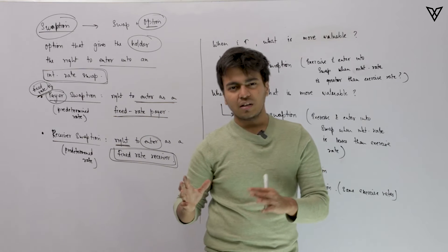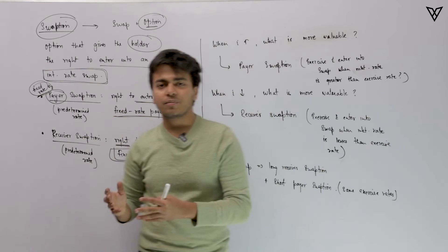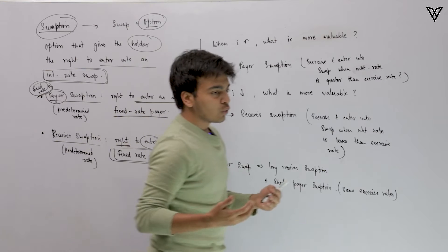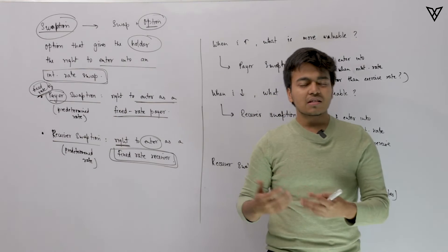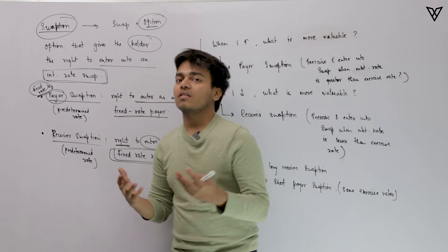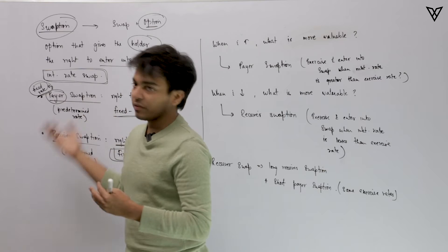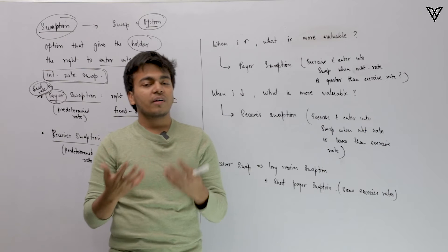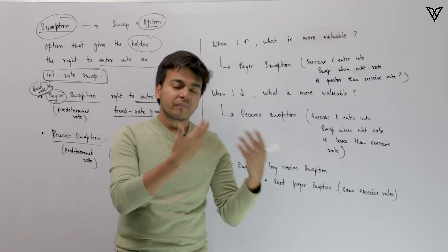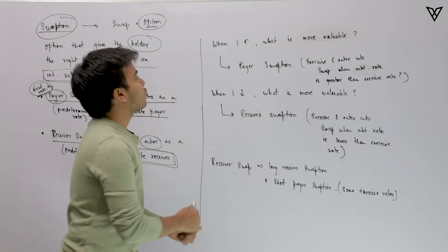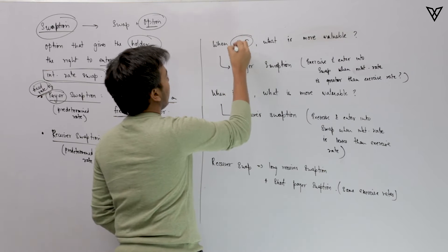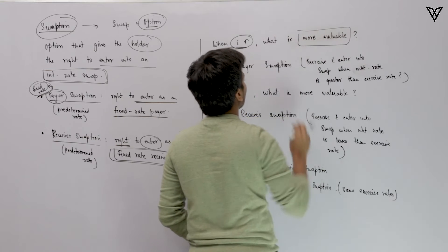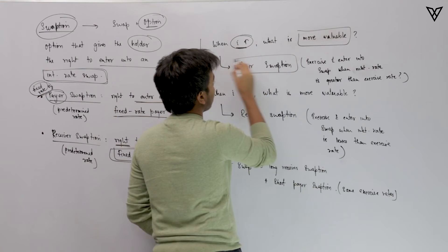I will be keeping all the calculations aside as those are not really important from the examination point of view. What I really want you to know is some equivalences and what these two swaptions would do given the interest rates go up or go down — which contract would be valuable for which party at what point in time. When interest rates go up, payer swaption is more valuable.